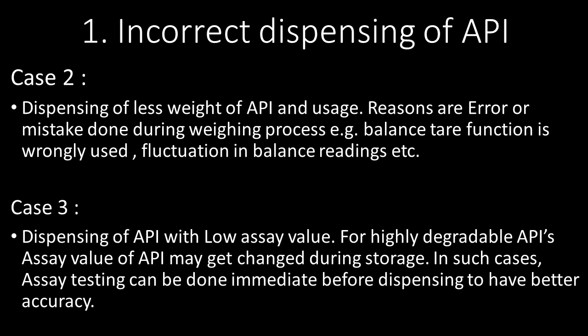The third case under incorrect dispensing of API is dispensing of API with a low assay value. Commonly in the pharmaceutical industry, periodic assay checking is done every 2 years. For highly degradable APIs, the assay value may change during storage. In such cases, assay testing can be done immediately before dispensing to have better accuracy.